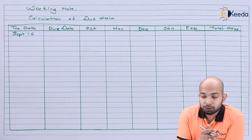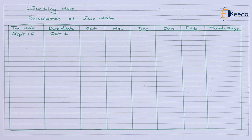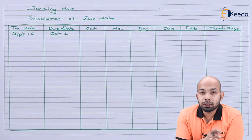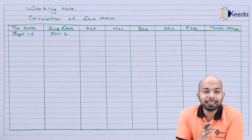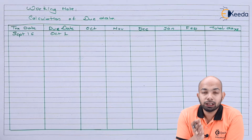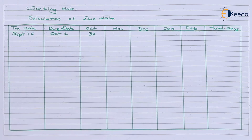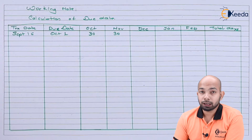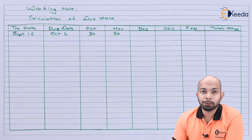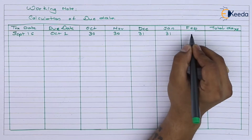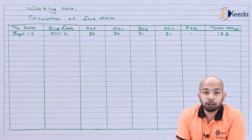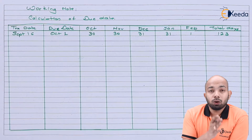The first transaction is for 16th September with a due date of 1st October. So you calculate total days from 1st October until 1st February. The whole month of October is included because 1st October is the due date. The same applies for November, December, and January — all days are counted — while for February only one day is counted since the account closes on the 1st. Totaling all these gives the total number of days for this transaction.